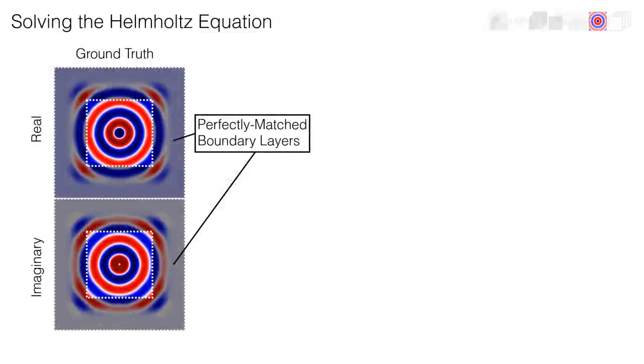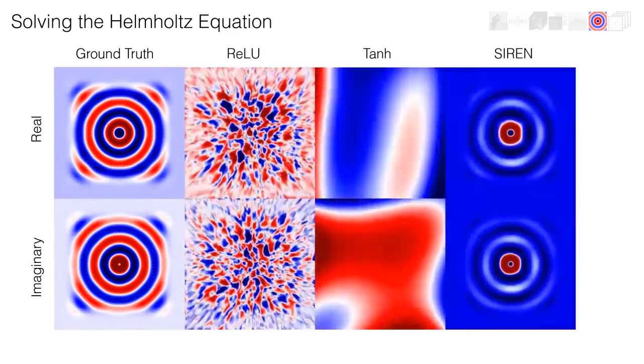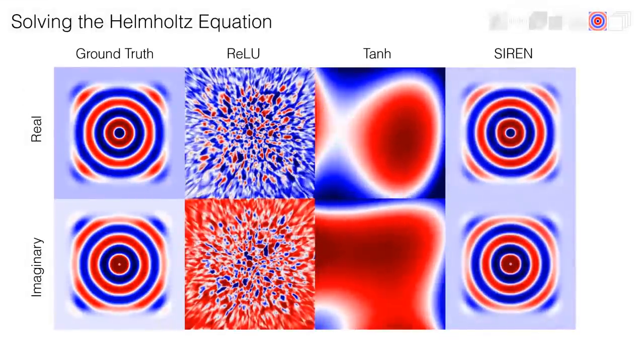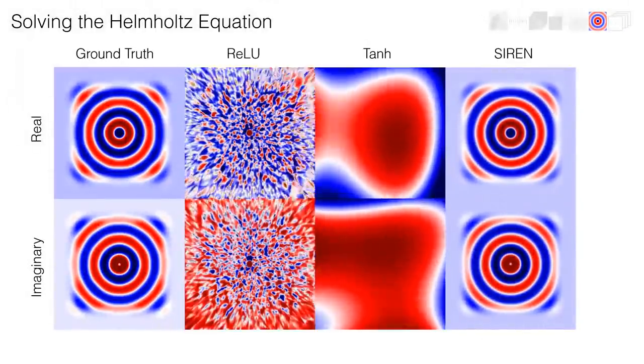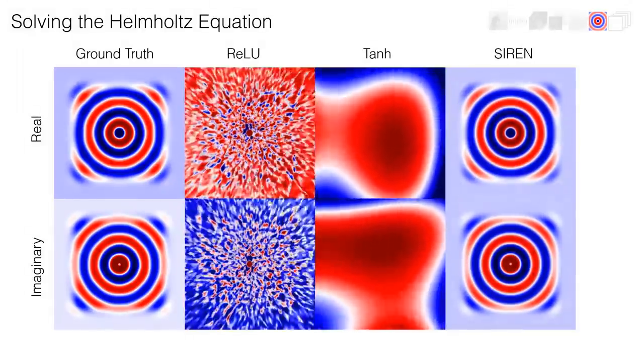We show the convergence across the entire optimized domain. Here, the domain boundary consists of a perfectly matched layer which attenuates outgoing waves to ensure the problem is well posed with a unique solution. Both ReLU and hyperbolic tangent MLPs fail entirely to reconstruct the wave field, while the SIREN MLP converges swiftly and accurately.